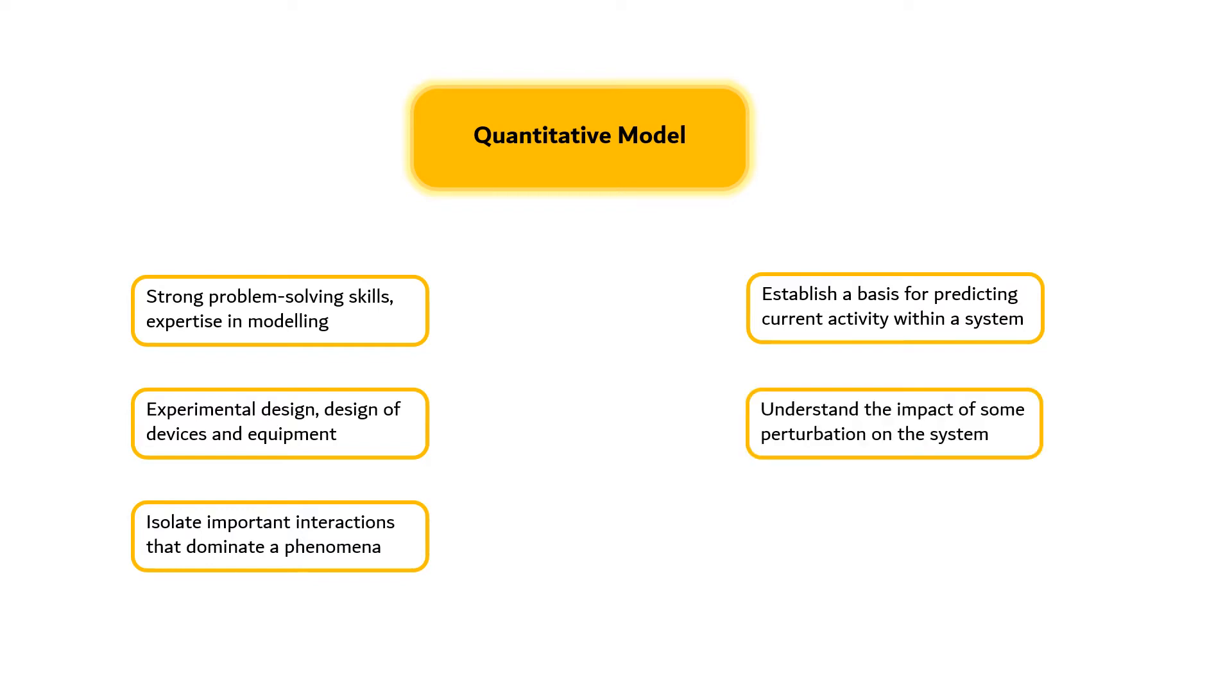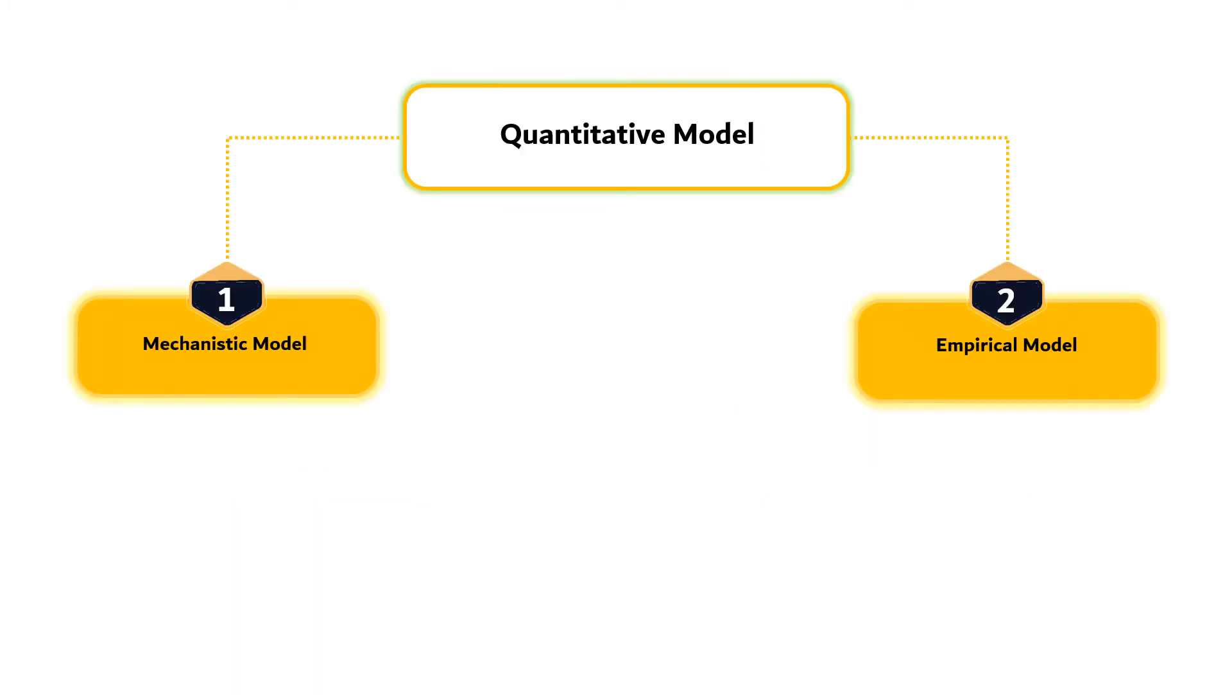Mathematical models are often used to represent biological and physical phenomena. Two general classifications of mathematical models are mechanistic and empirical model. Mechanistic models are based on theoretical assessment of the phenomenon being measured. Empirical models are based on experimental computational data to describe a complex system.